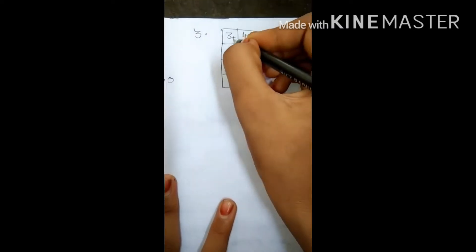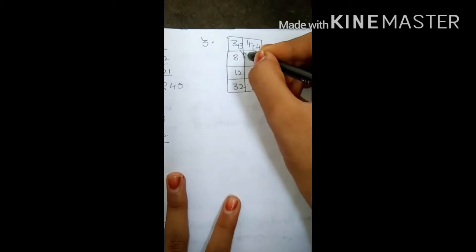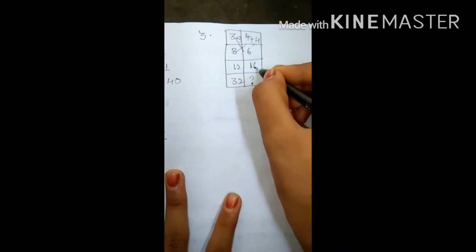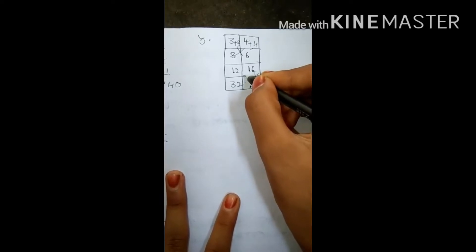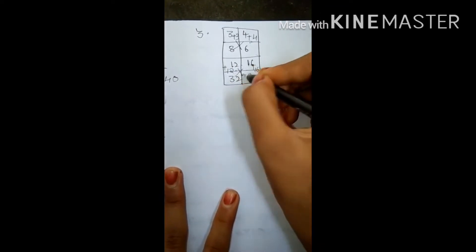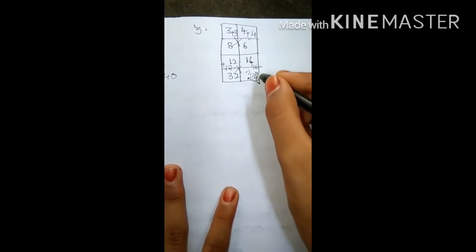Here, 3 plus 3 equals 6, and 4 plus 4 equals 8. Here same way, 16 plus 16 equals 32, and 12 plus 12 equals, here perfect answer is 24. Did you got it? Our answer is 24.